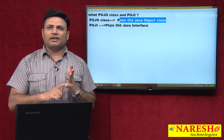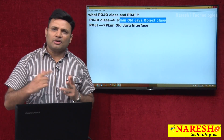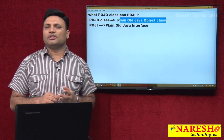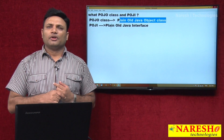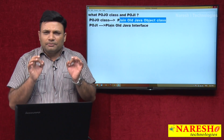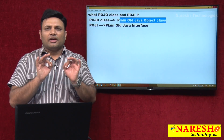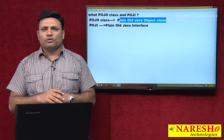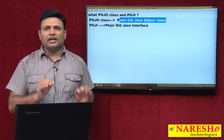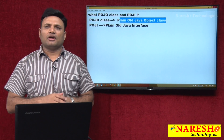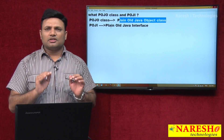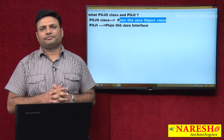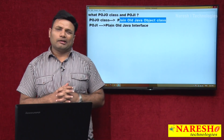One is 'I' for interface, and again you are explicitly using the term interface one more time. So that is why you simply say POJO class or POJI — not 'POJI interface.'